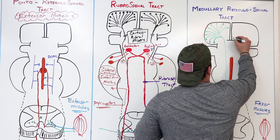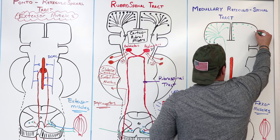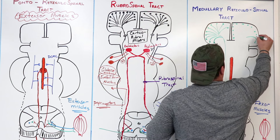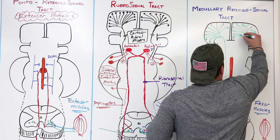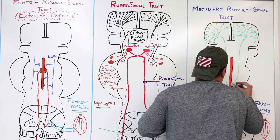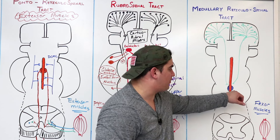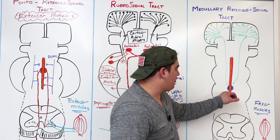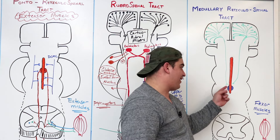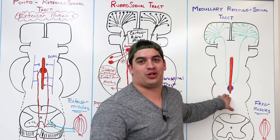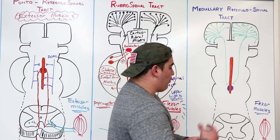From both sides, you'll have corticoreticular fibers descending downward and giving stimulation to the medullary reticular formation — special different types of nuclei in this area. They believe it might even be the gigantocellularis nucleus, which we talked about in other videos, specifically the pain modulation video.